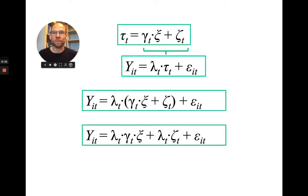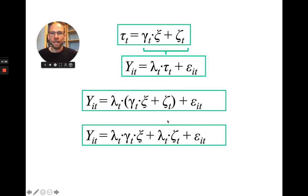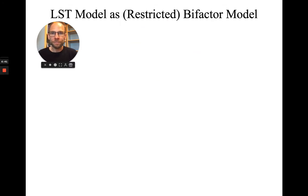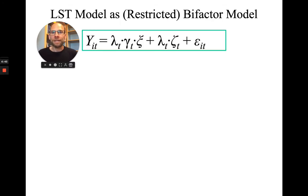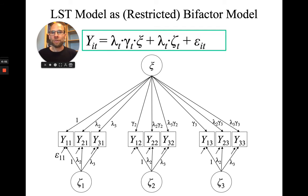The first-order factors are no longer depicted in the model. We can simply take this combined equation and depict it as a path diagram, and then we have a bifactor model. Here again is the equation we just derived — and this is what it looks like when we depict it for the same design as a path diagram.